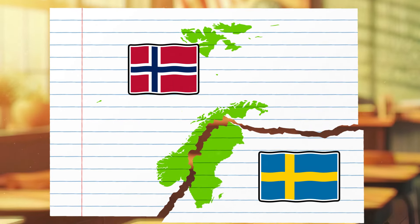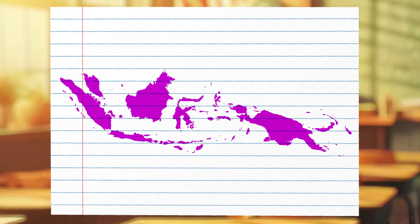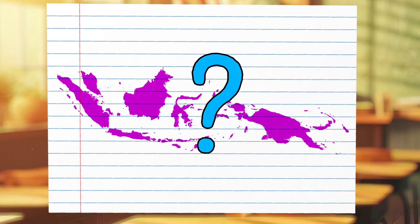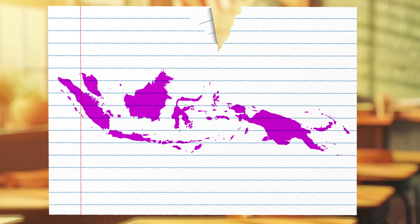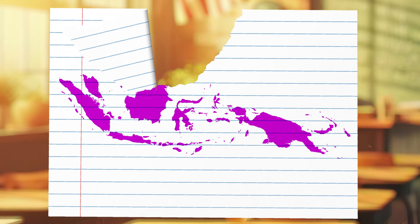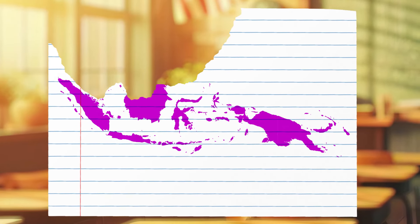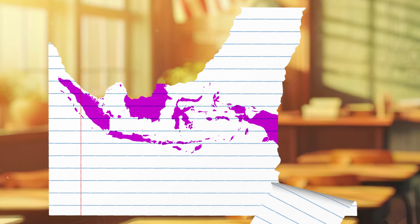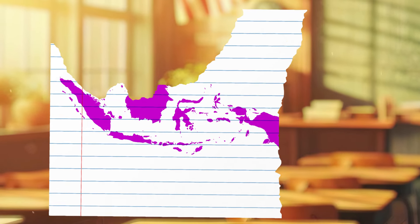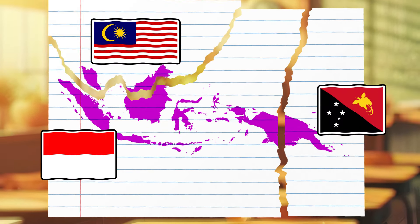The alliance of Norway and Sweden. And here we have three countries joining together – Malaysia, Indonesia and Papua New Guinea.